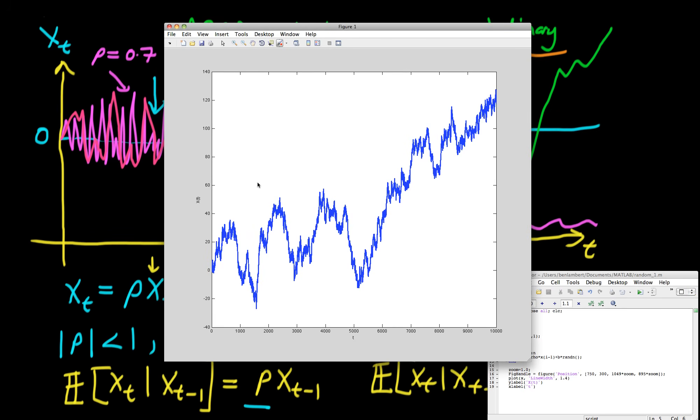If I run it again, yeah, this is what I was trying to show. We're now getting a series which in the time periods we've actually run it doesn't look like it's returning towards 0 anytime soon. So there is a very obvious qualitative difference between AR1 processes which are stationary and those which are non-stationary.